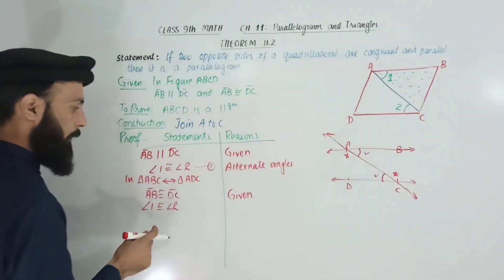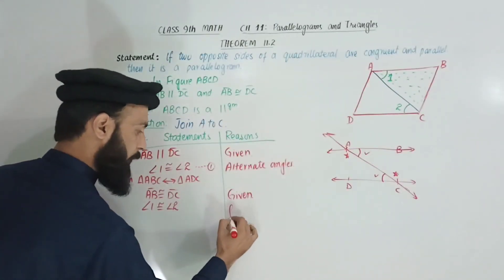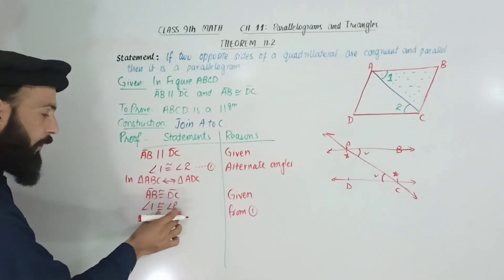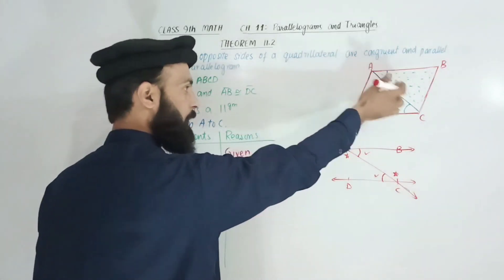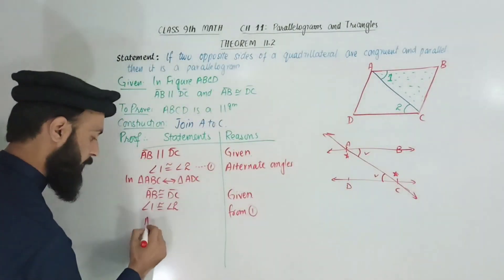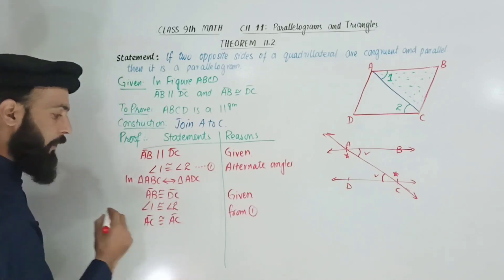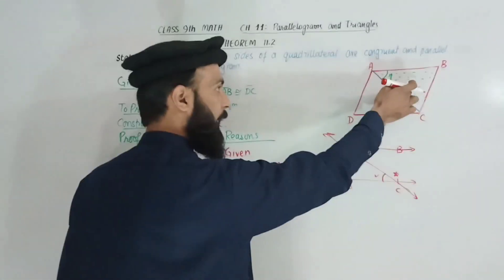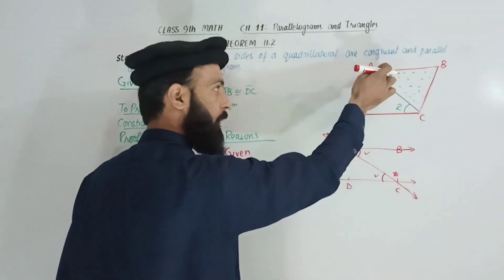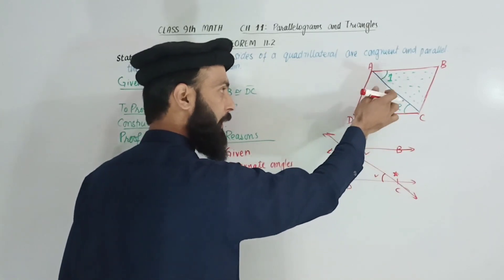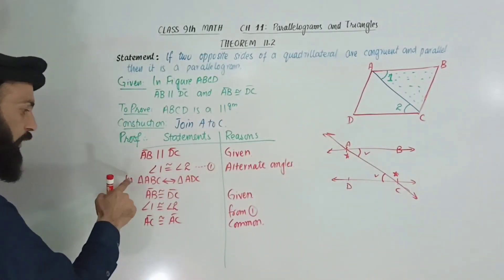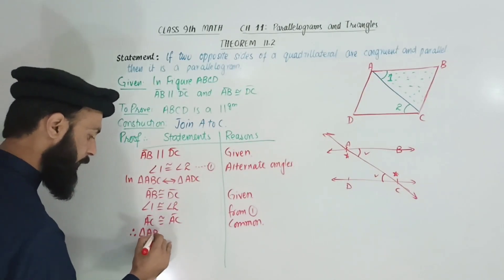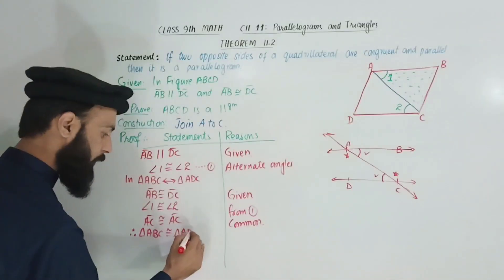Angle 1 equals angle 2. The side AC is common to both triangles — AC is congruent to AC (common side). By the SAS postulate: if two sides and the included angle of one triangle are congruent to two sides and the included angle of another, then the triangles are congruent. Therefore, triangle ABC is congruent to triangle ADC by SAS.